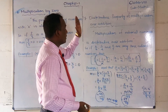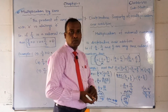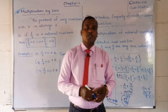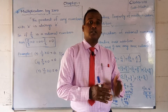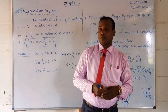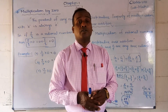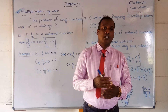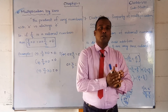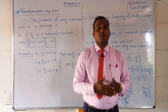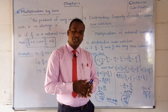Both LHS and RHS give 69/48, so LHS = RHS — proved. The distributive law is satisfied in multiplication. I hope you have understood all the properties of multiplication. Remember to also recall the properties of addition of rational numbers, properties of subtraction, and properties of multiplication. In the next video, we will discuss the properties of division of rational numbers.